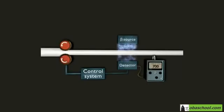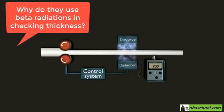Maybe some of you would ask why do we use beta radiation in checking the thickness for fabricating the papers and not the other types of radioactivity, gamma radiations or alpha radiation. Think of it.